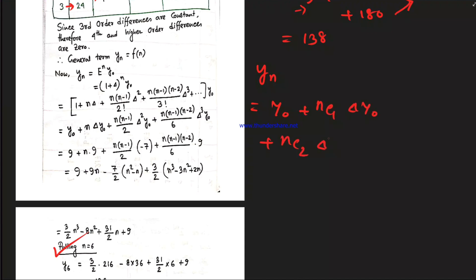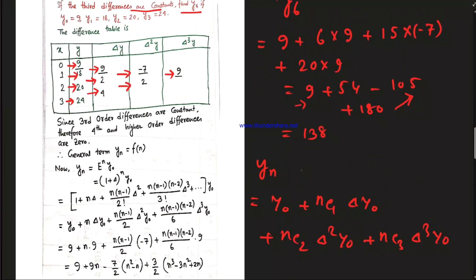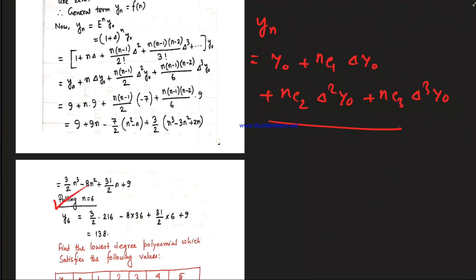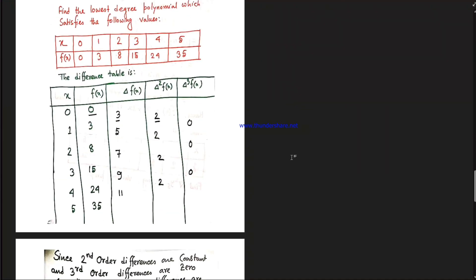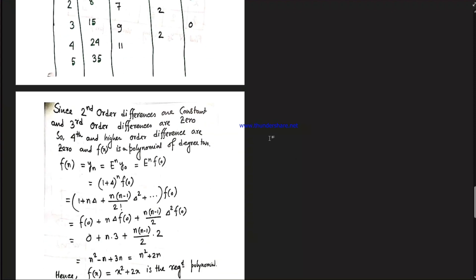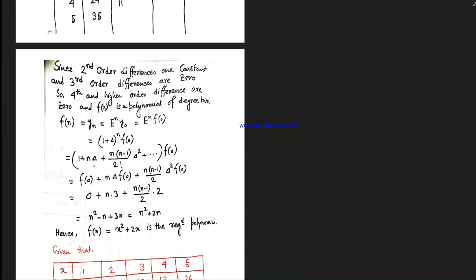Applying Newton's forward formula: nC1 means N times del y0 = 9; nC2 means N(N-1)/2 times del^2 y0 = minus 7; nC3 means N(N-1)(N-2)/6 times 9. This gives the polynomial. To find the lowest degree polynomial satisfying the given values: del^2 y0 corresponds to f0, del y0 to delta f0, del^2 y0 to the second difference. The polynomial is N squared plus 2N.